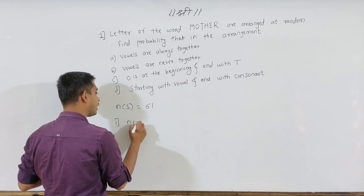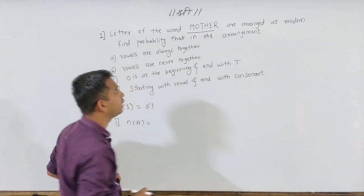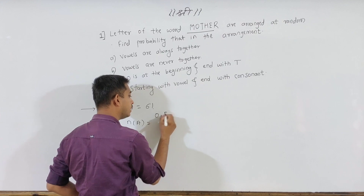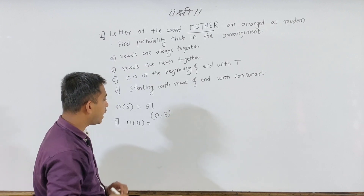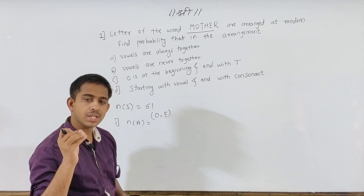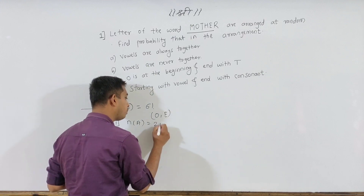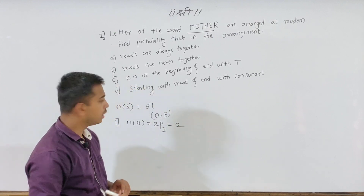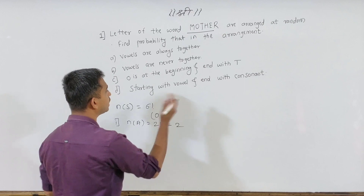Now, the condition is: vowels are always together. When vowels are always together, we treat them as one part. We have 2P2 to arrange the vowels among themselves, and we have to say what the value of the vowels is — OE — and these vowels are always together, so they form one unit.